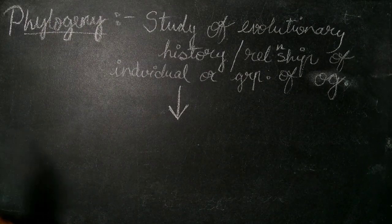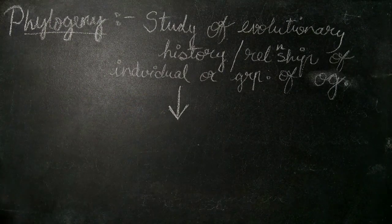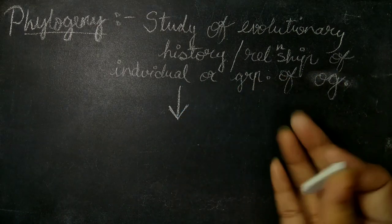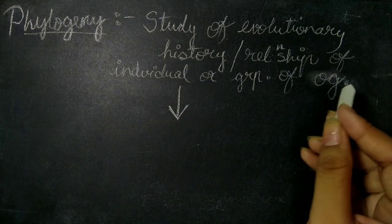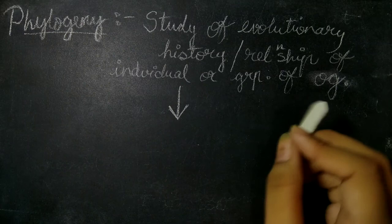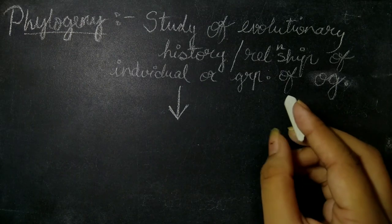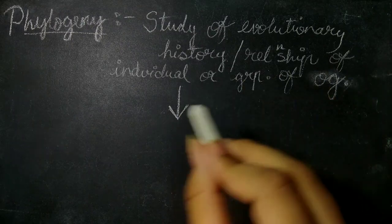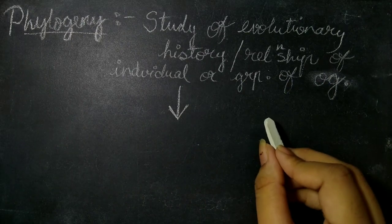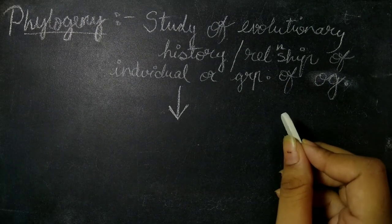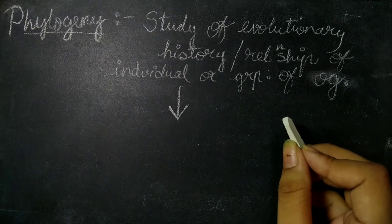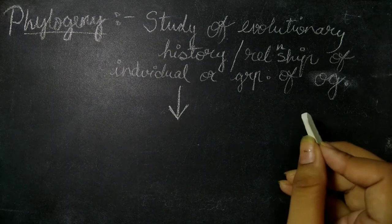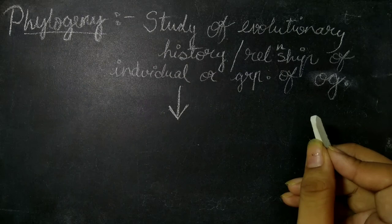Next is phylogeny. Phylogeny is a study of evolutionary history of relationship of an individual or group of organisms. The diagram which shows this relationship of evolutionary history is usually known as the phylogeny tree, or we can say it is a family tree of this evolutionary relationship.